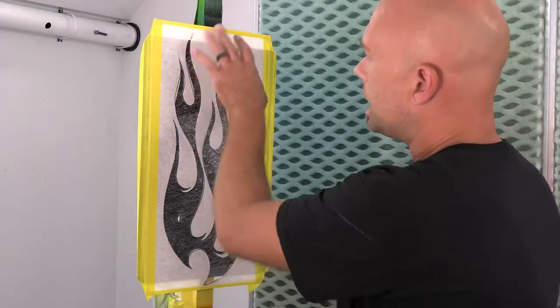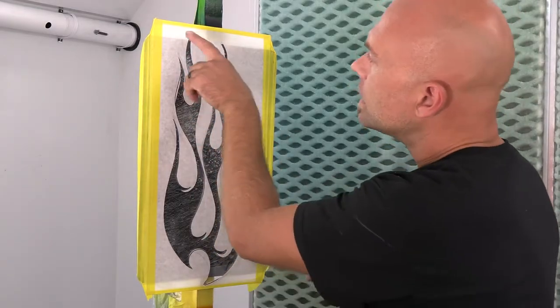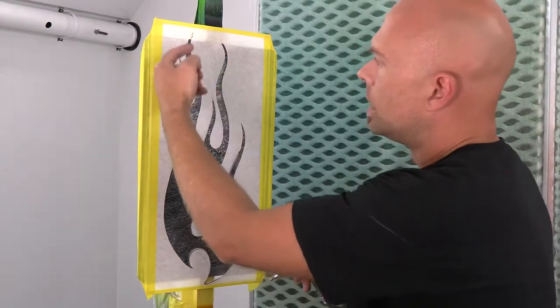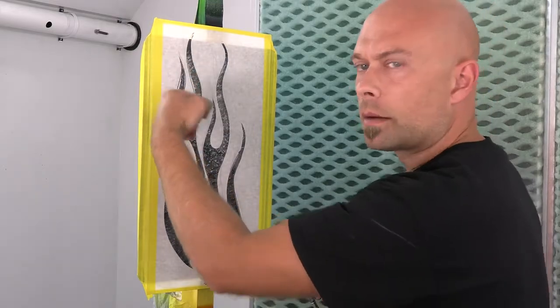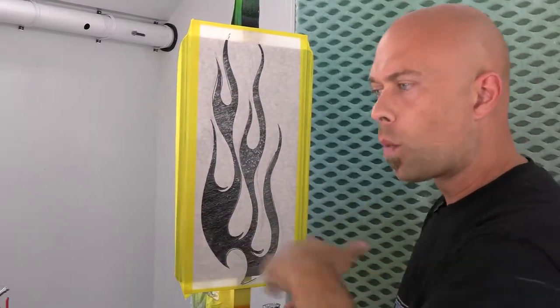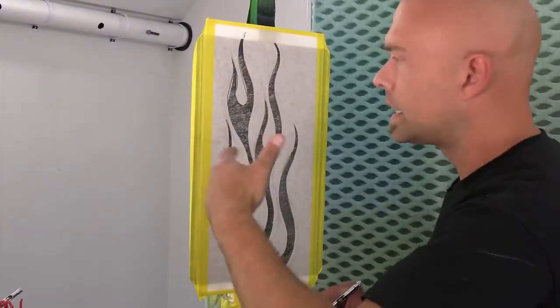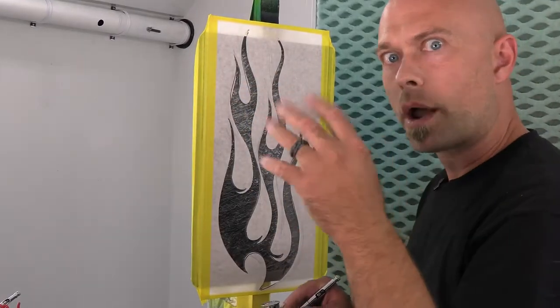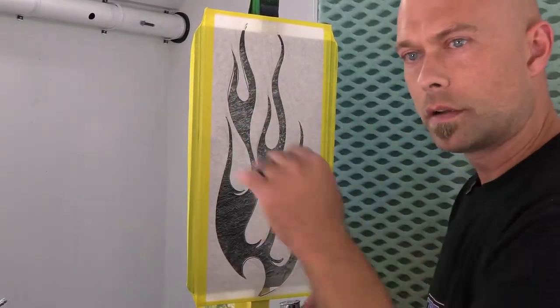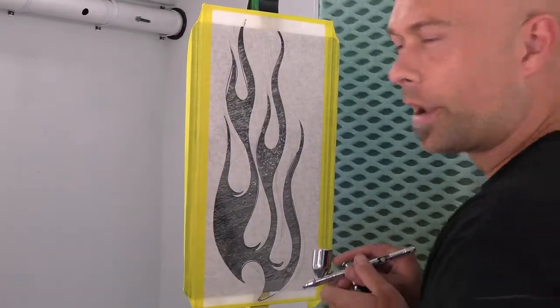So what I'm going to do is start with my light yellow, and I'm actually going to leave it a little bit lighter at the tips and darken it as I move to the bottom because what's going to happen is when I put my white over everything at the very end, it's actually going to make that white a little bit brighter, almost like fading to a white hot tip instead of a yellow. So we're going to start spraying.